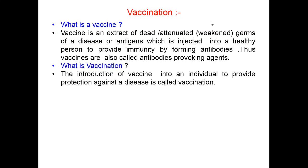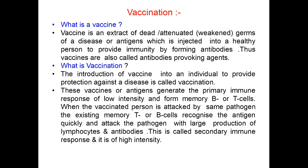What is vaccination? The introduction of vaccine into an individual to provide protection against a disease is called vaccination. These vaccines or antigens generate the primary immune response of low intensity and form memory B and T cells. When the vaccinated person is attacked by the same pathogen, the existing memory T and B cells recognize the antigen quickly and attack the pathogen with large production of lymphocytes and antibodies. This is called secondary immune response and it is of high intensity.